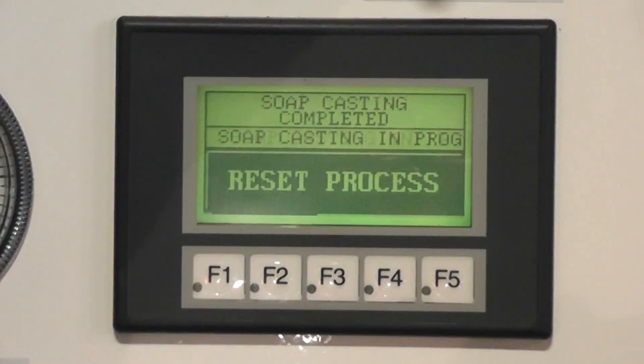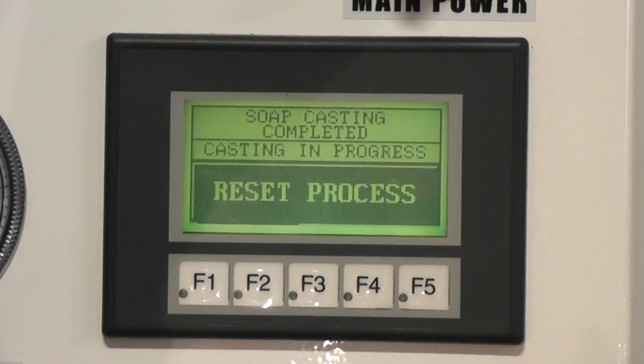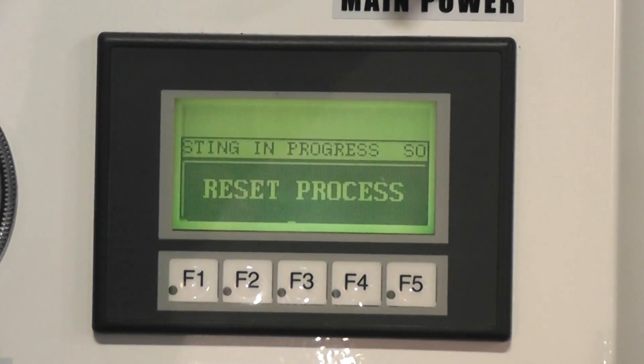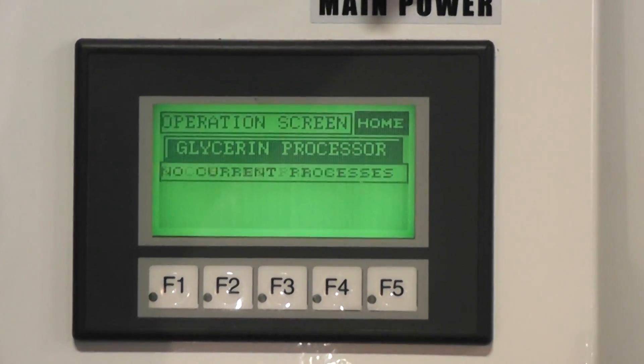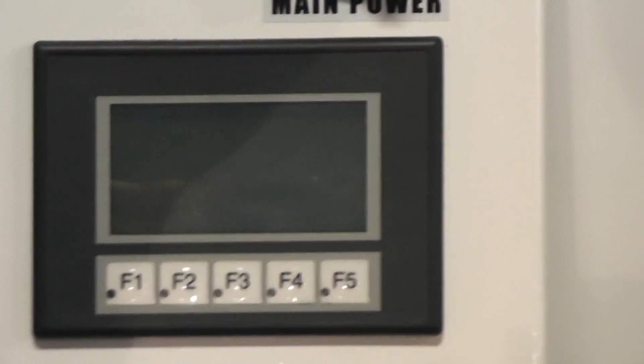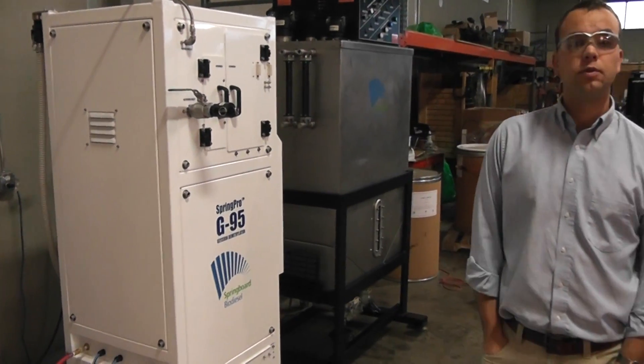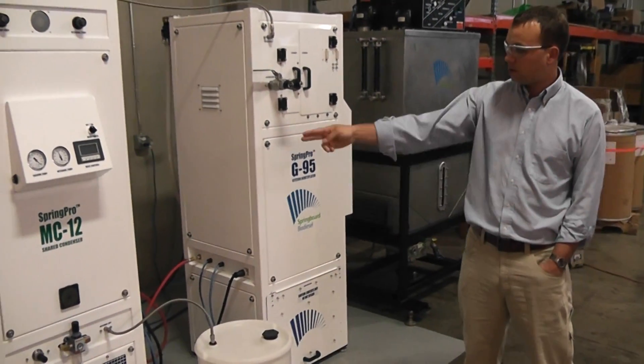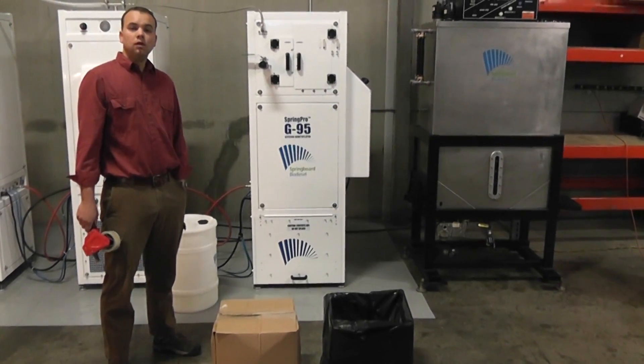Okay, so our soap casting is completed. The drain's purged out and it's telling us that right here. I'm going to go ahead and reset the process and then we'll go back to the operation screen. I'm going to go back home and shut these machines down. So that was it, that's how our glycerin treatment system works, the G95 glycerin demethylator and the MC12 shared condenser.